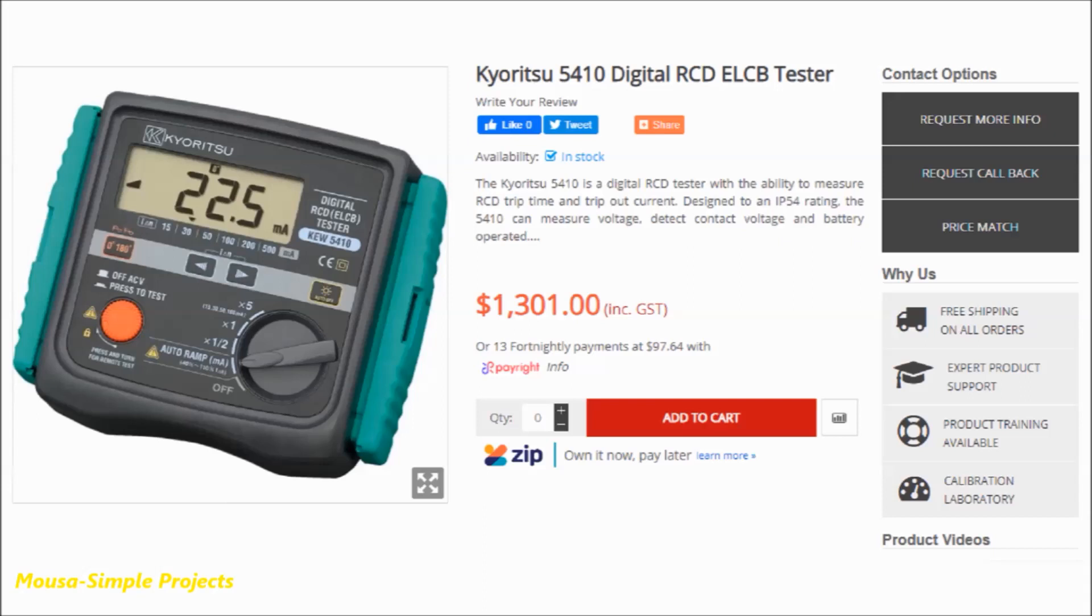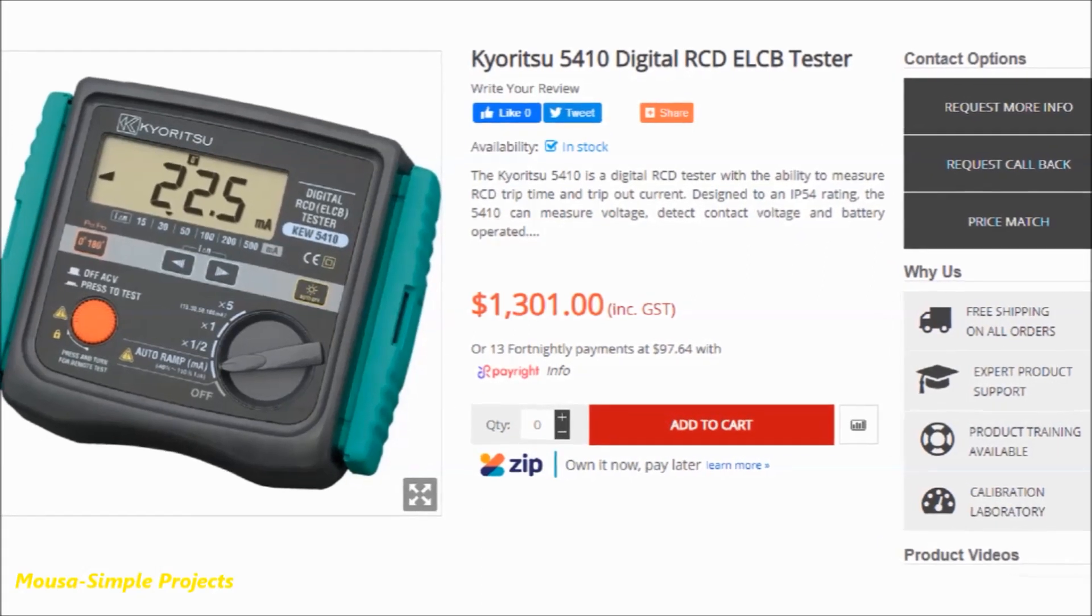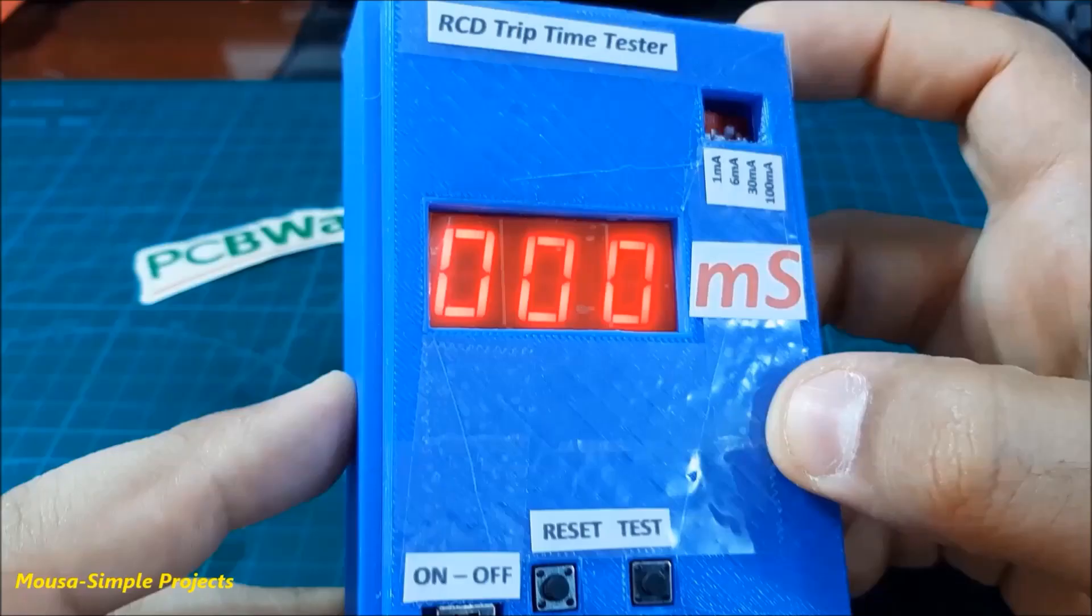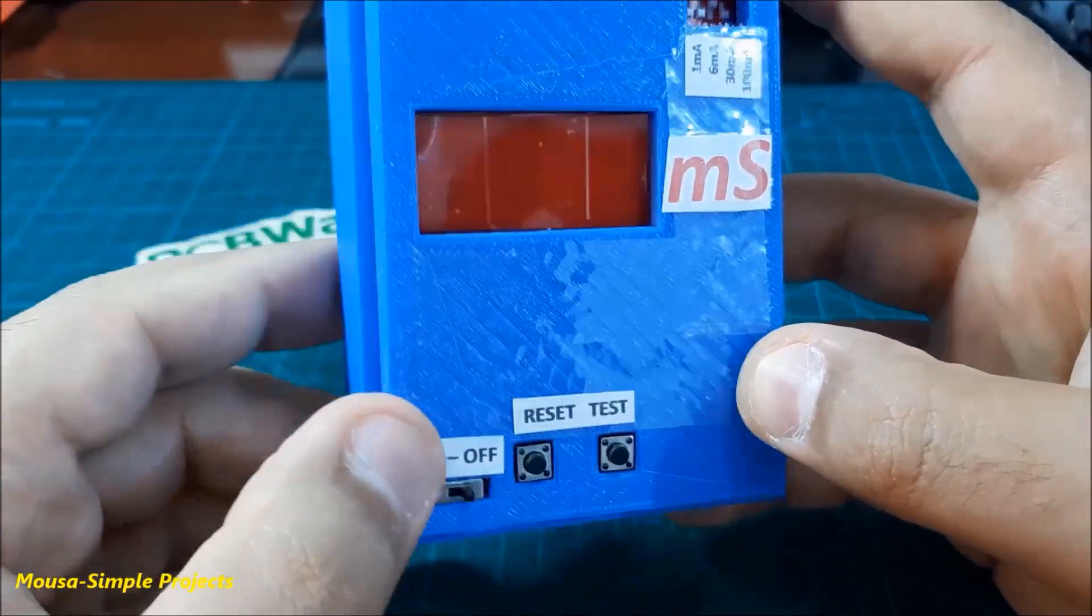We can measure the delay time by using an RCD trap time tester, but the problem is that they are so expensive. So I'm trying to make my own for low cost.